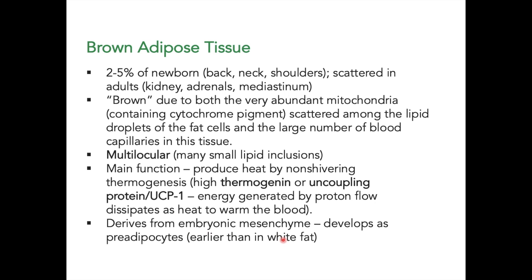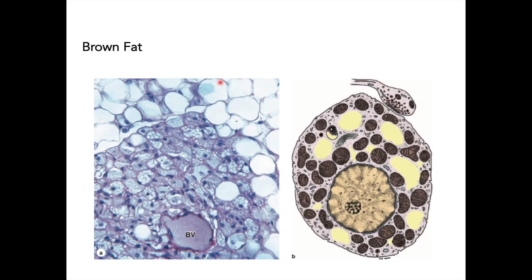Brown adipose tissue derives from embryonic mesenchyme, and it develops earlier than white fat since it is the predominant adipose tissue in the newborn. In histological sections, blood vessels and adjacent white adipose tissue are visible alongside the brown adipocytes, which are slightly smaller and contain a central spherical nucleus and numerous lipid droplets.